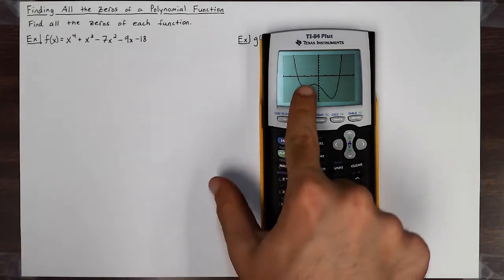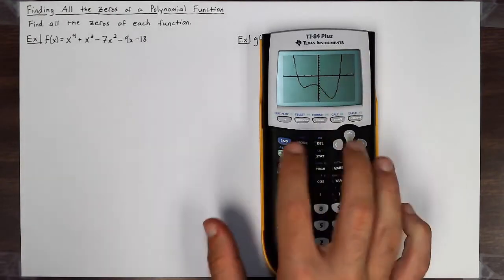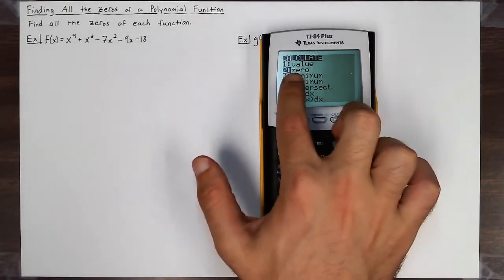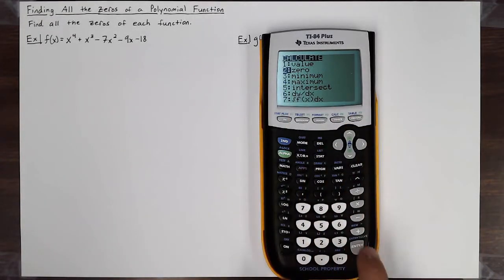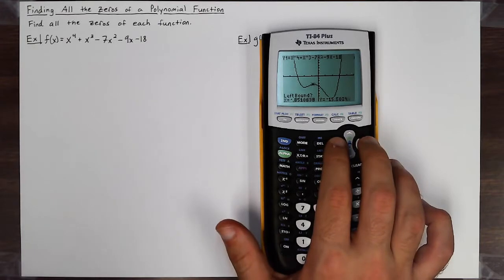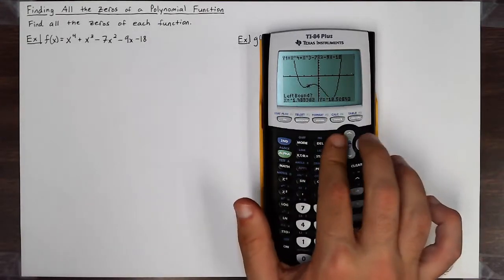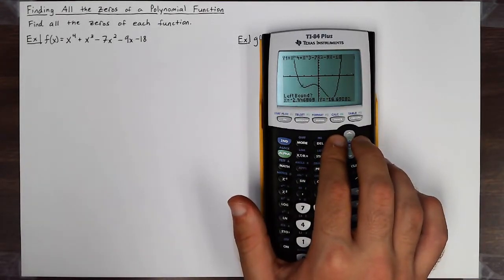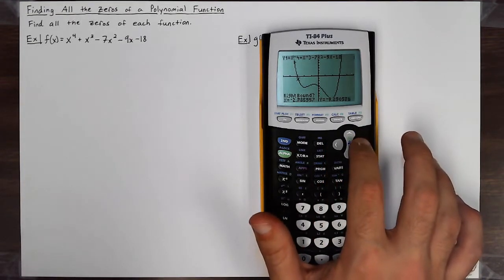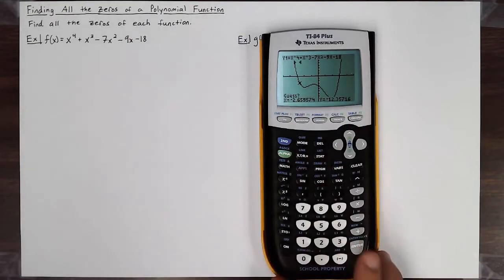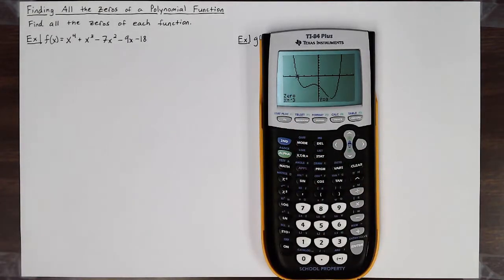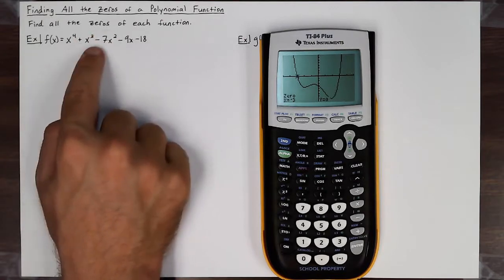I can see it crosses the x-axis at two spots. If I use the second trace to calculate — using the zero feature of the calculator — I hit enter on zero, get a left bound by going left of one of the zeros, then go right of it and hit enter, then hit enter one more time to guess. One zero is at negative three, so I've already found one of them.